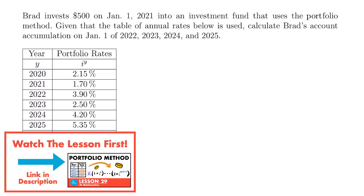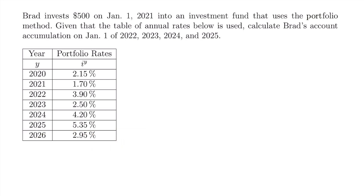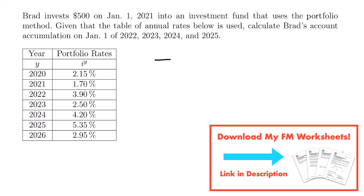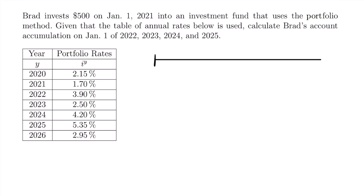We're going to be doing a few different calculations in this problem. We want to find the balance of Brad's account, or the accumulation of his investment of $500, at the beginning of four different years. So to keep everything straight, let's draw a timeline for this scenario. There are five different years we need to note. The first year will be 2021, when Brad makes the investment of $500.